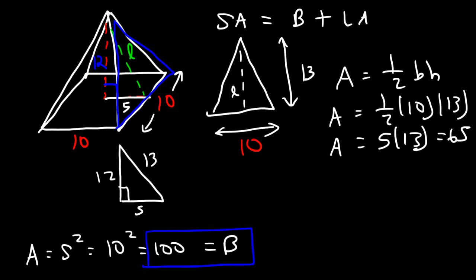The lateral area is going to be the total area for all four triangles. So it's going to be 4 times 65, which is 260. So that's the lateral area.